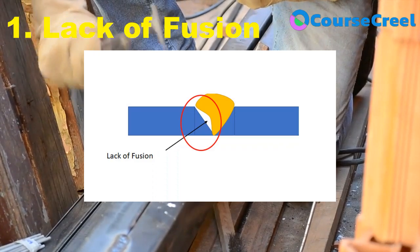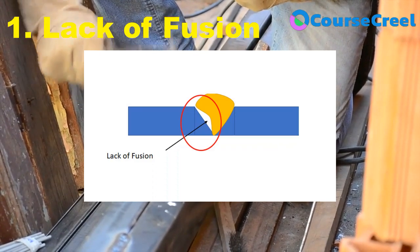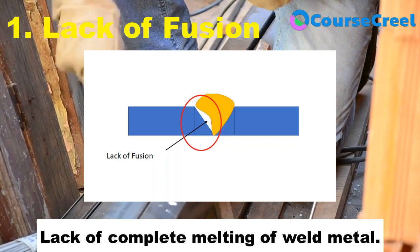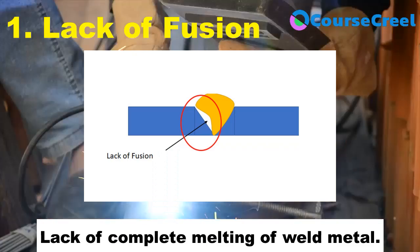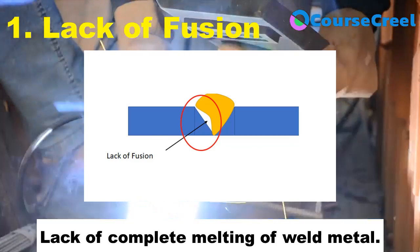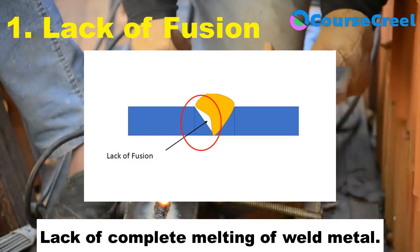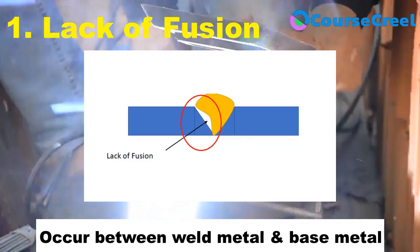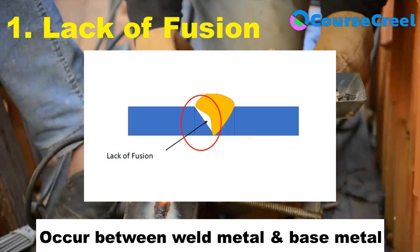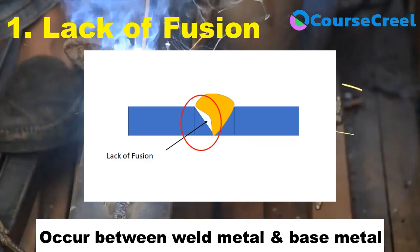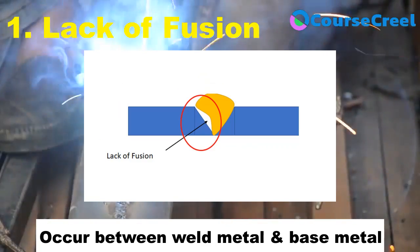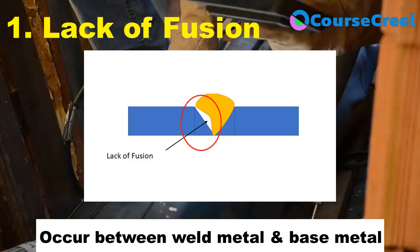Let's start with lack of fusion. Lack of fusion is defined as lack of complete melting — if the weld metal does not melt completely, that is considered lack of fusion. It mainly occurs between weld metal and base metal, or between two layers of weld metal. So lack of fusion is related to the melting of the weld metal.